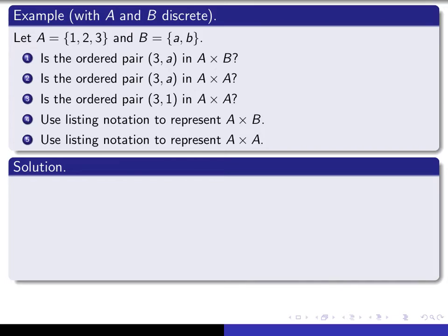So first of all, is the ordered pair (3, a) in A × B? You just have to observe that 3 is an element of A, because here it is, and a is an element of B. So yes, that ordered pair is in the Cartesian product A × B. Is the ordered pair (3, a) in A × A? Well, no, because the second component is not an element of A.